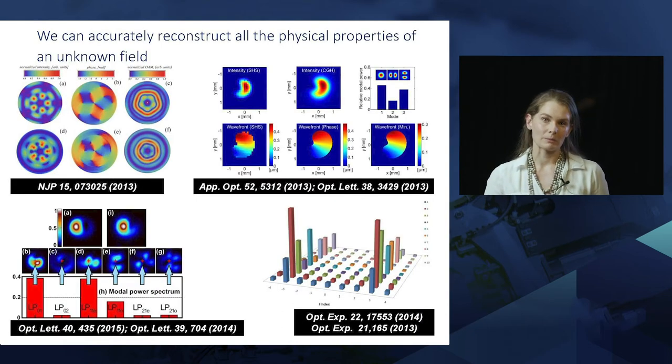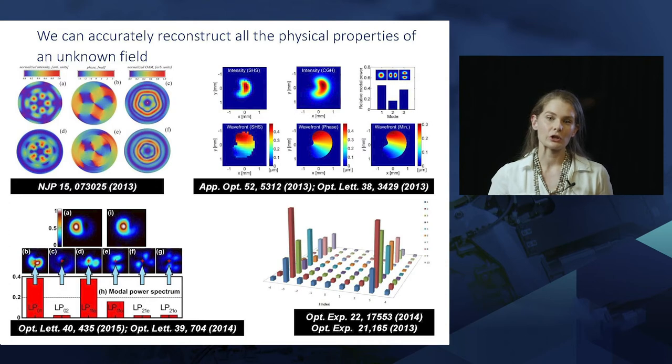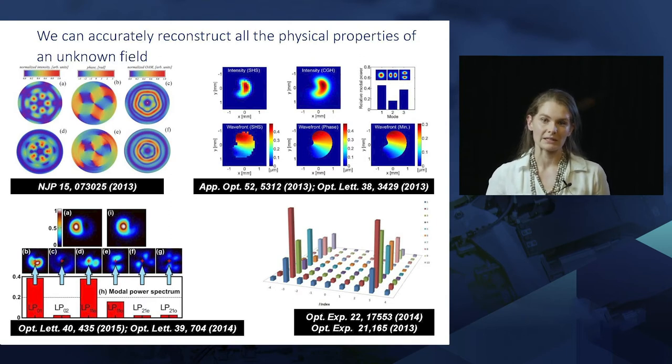And by using this modal decomposition technique, we are able to extract all the parameters that are associated with optical fields. So not just in terms of its amplitude, intensity and phase, we can extract its orbital angular momentum density, its pointing vector. We can also monitor in real time how modes vary when emerging from optical fibers. This slide just illustrates over the course of the years the different types of measurement techniques that we were able to develop.